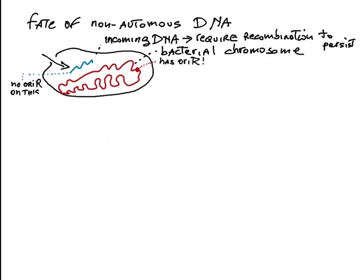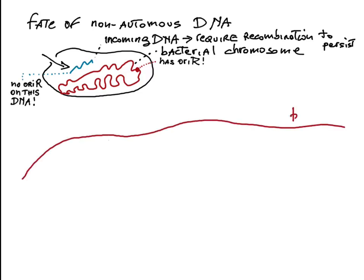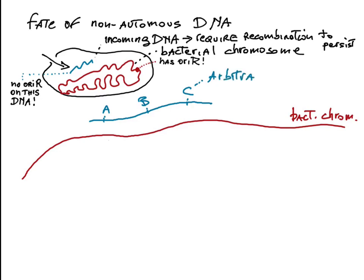Let's look at this process by zooming in on the bacterial chromosome in red and on the incoming DNA in blue. For reference, let's mark three loci, A, B, and C. These could be arbitrary sequences or even genes.